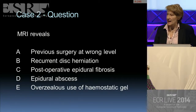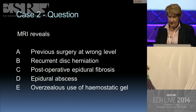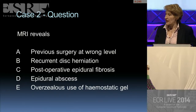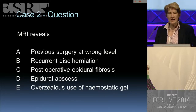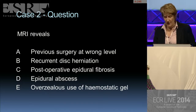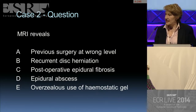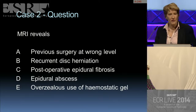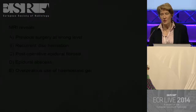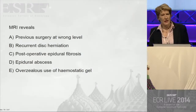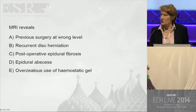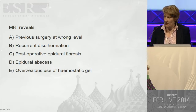MRI in this case reveals previous surgery at the wrong level. For those of you who may not be familiar with hemostatic gel, this is a substance used by spinal surgeons to try and control small bleeders at the operation site.